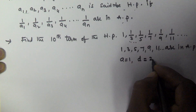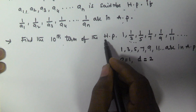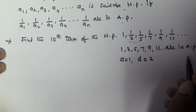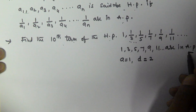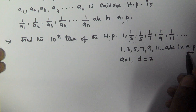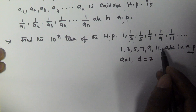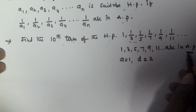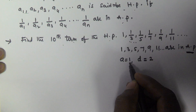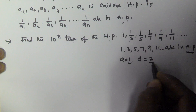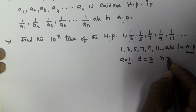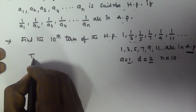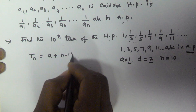To find the tenth term of the harmonic progression, we will first find the tenth term in the arithmetic progression and then take its reciprocal — that will give us the tenth term of the harmonic progression. So we have a equals 1, d equals 2, and n equals 10.